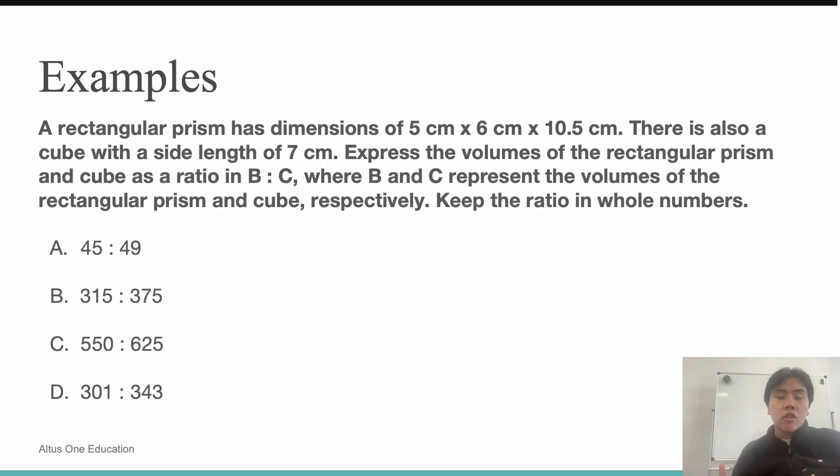Alright, now this question states that a rectangular prism has dimensions of 5 cm x 6 cm x 10.5 cm. There is also a cube with a side length of 7 cm. Express the volumes of the rectangular prism and cube as a ratio in B to C, where B and C represent the volumes of the rectangular prism and cube respectively. Keep the ratio in whole numbers.